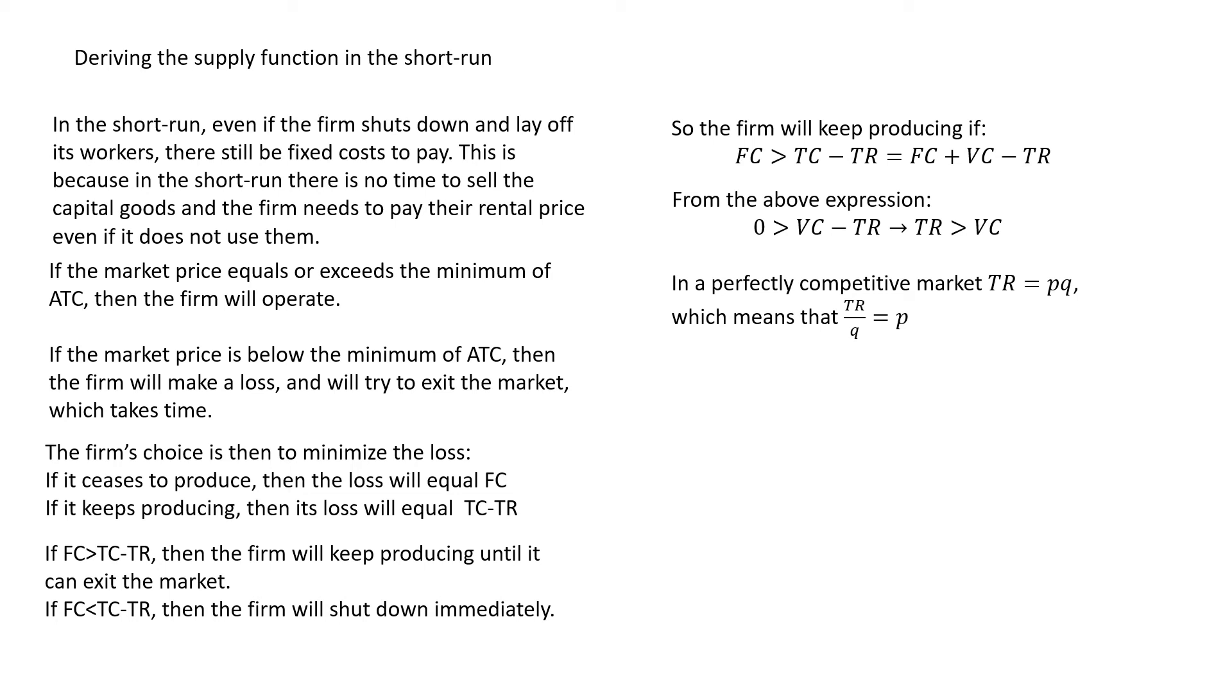We know that in a perfectly competitive market, total revenue is P times Q with P being just a constant. This means that if you take the average of the total revenue, then you get just simply the price. So, if we divide both sides of the above condition by Q, then basically we have a different version of the same condition. As long as the market price of the good exceeds the average variable cost, the firm will keep producing for a short time until it can get rid of its capital goods and can exit the market.